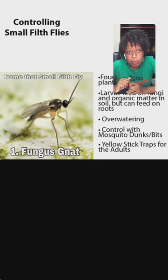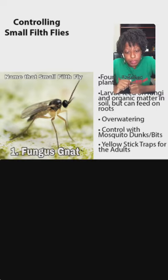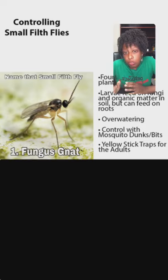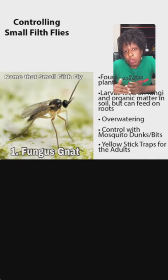To control the adults you're going to use yellow sticky traps. The adults do not actually feed at all, so what you're trying to do is attract them — they're attracted to yellow — and they'll stick to those sticky traps. As long as the adults get stuck to the sticky traps, they're not going to be able to reproduce.